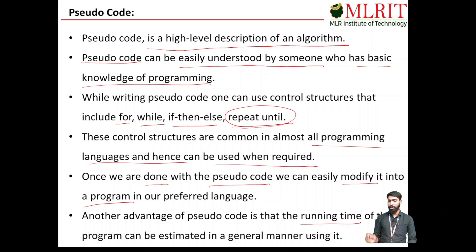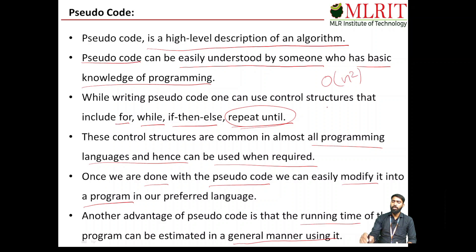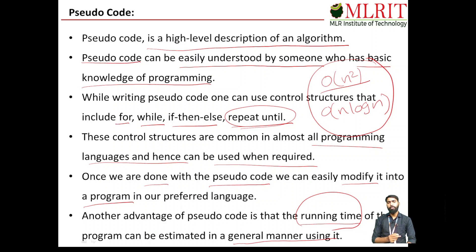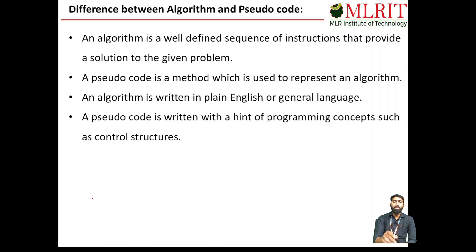Another advantage of pseudo code is that the running time of the program can be estimated in a general manner using it. For example, the time complexity of bubble sort is O(n²) and merge sort is O(n log n). By using the pseudo code, we can find the time complexity of a program — that is, specifying it mathematically in a general manner.